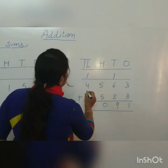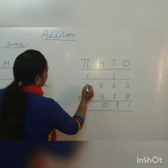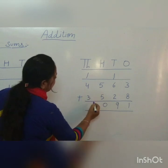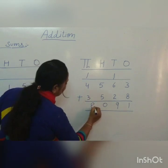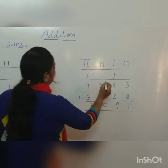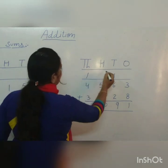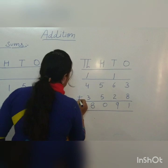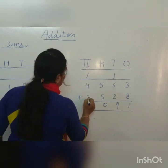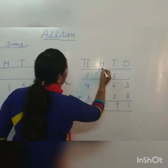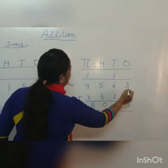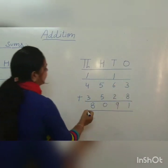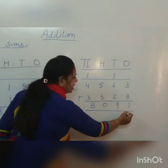1 thousand carry plus 4 thousands equals 5 thousands. 5 thousands plus 3 thousands is 8 thousands. So 4 thousands, 5 hundreds, 6 tens, 3 ones plus 3 thousands, 5 hundreds, 2 tens, 8 ones becomes the number 8,091.